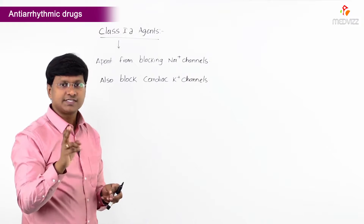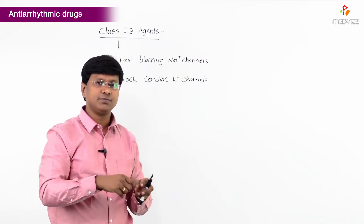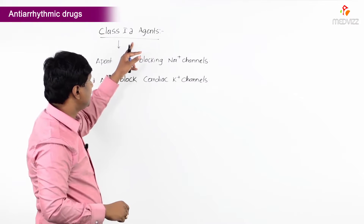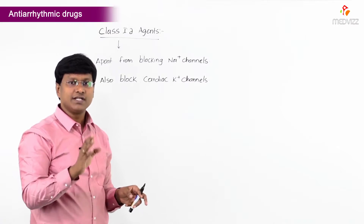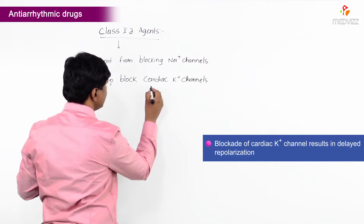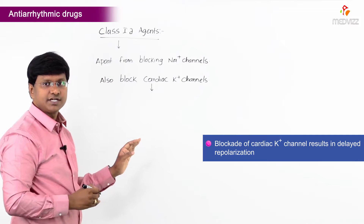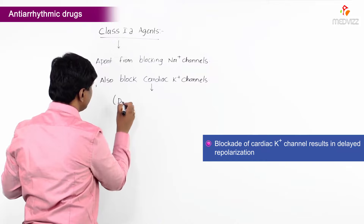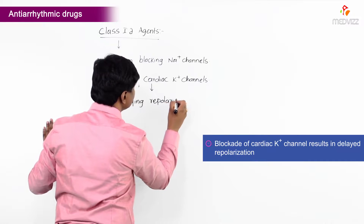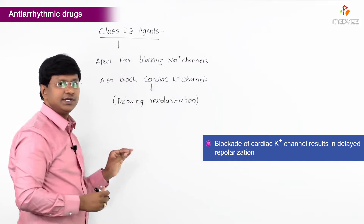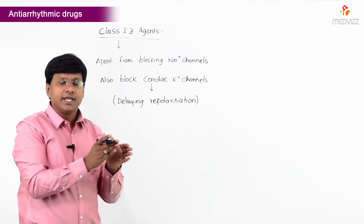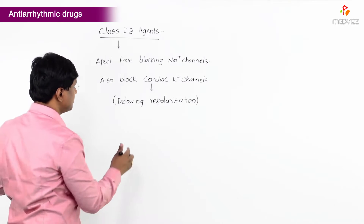When potassium channels are open, potassium within the cell moves out, causing repolarization. However, Class 1A agents block the cardiac potassium channels, so there is a delay in repolarization. This results in delaying of the repolarization.